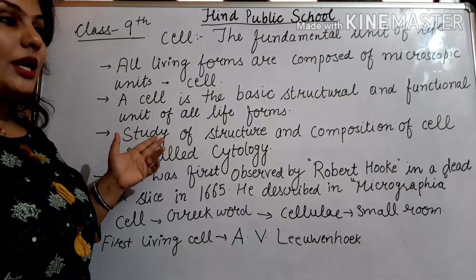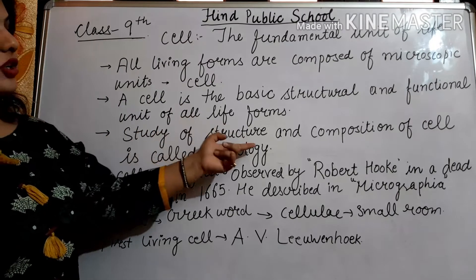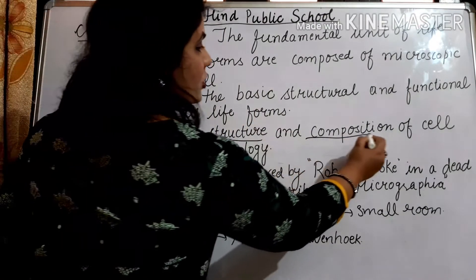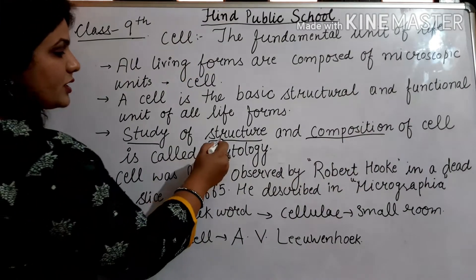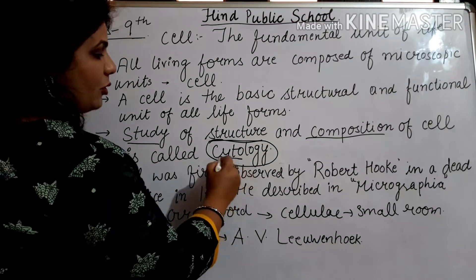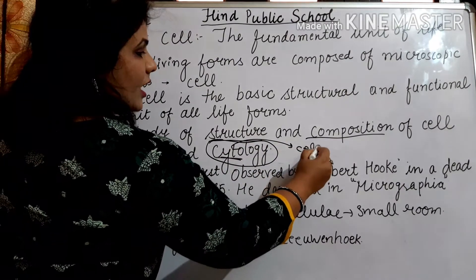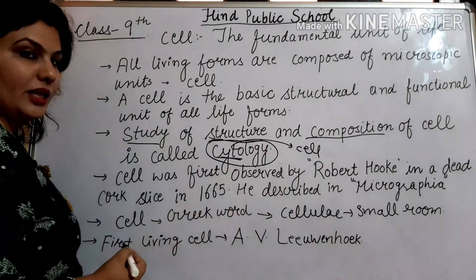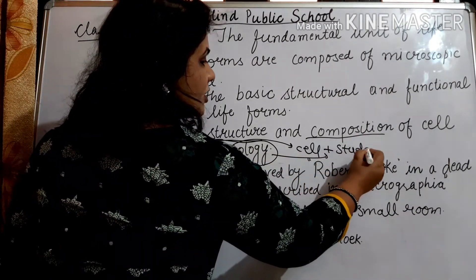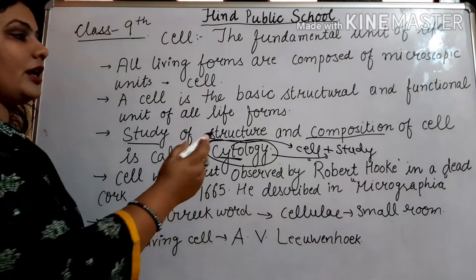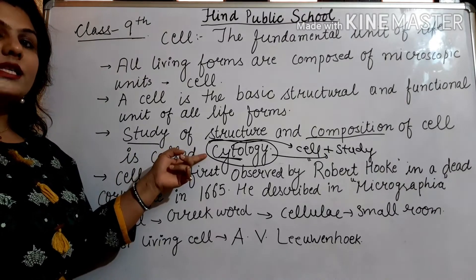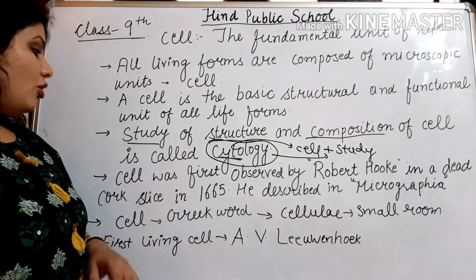Ab cell ki study ko kya bolenge? The study of the structure and composition of the cell is called cytology. It's called cytology, because cyto means cell and logy means study. The structure and composition of cell is studied under a branch of science that is called cytology.